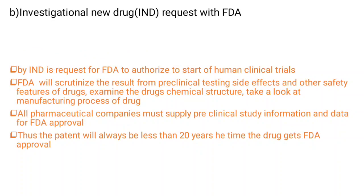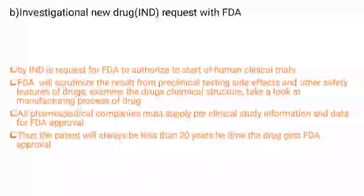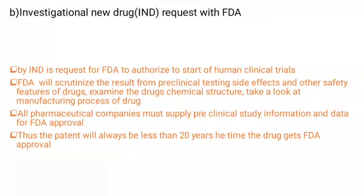Next is the Investigational New Drug (IND) request with FDA. IND is a request for the FDA to authorize the start of human clinical trials. The FDA will scrutinize results from preclinical testing, side effects, and other safety features of the drug; examine the drug's chemical structure; and review the manufacturing process. All pharmaceutical companies must submit preclinical study information and data for FDA approval. The patent will always be less than 20 years.